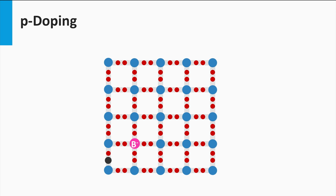The boron atom left behind is not neutral anymore but becomes negatively charged. This negative charge is fixed to the position where the boron atom is residing in the lattice. The result is that by adding a boron impurity we have one extra free mobile hole available and one fixed negative charge. This is called p-doping.